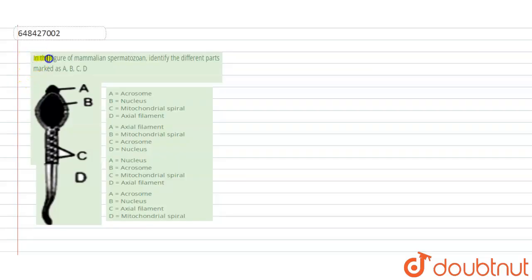The question is: In the figure of mammalian spermatozoa, identify the different parts marked as A, B, C and D. So here they are given the diagram of the mammalian spermatozoa, or we can say the sperm, that represents the male gamete.